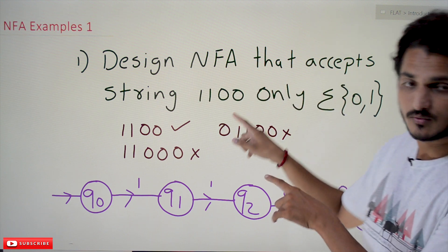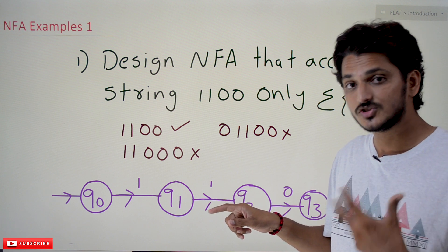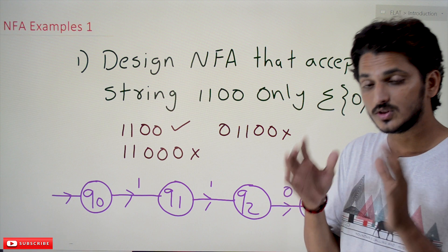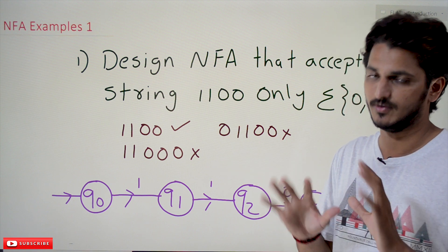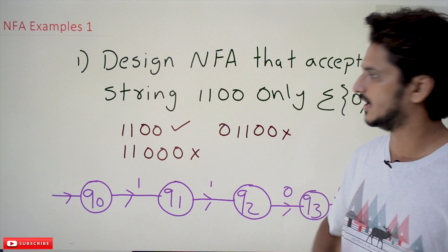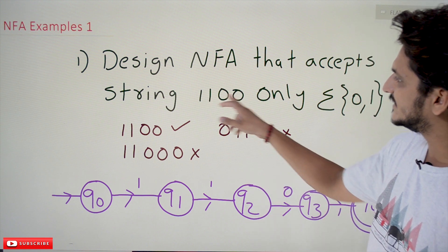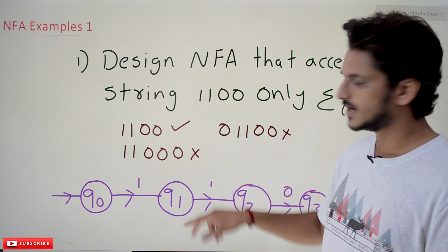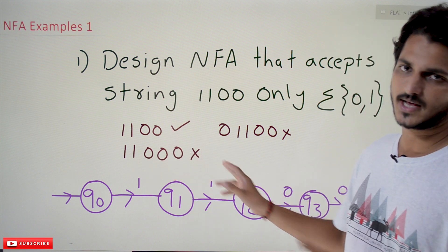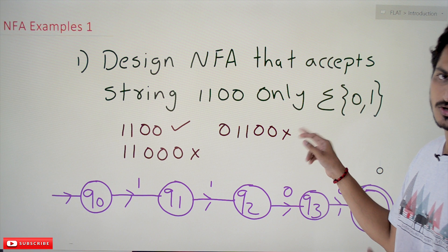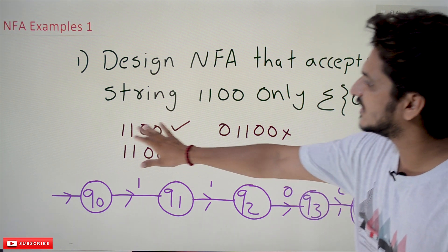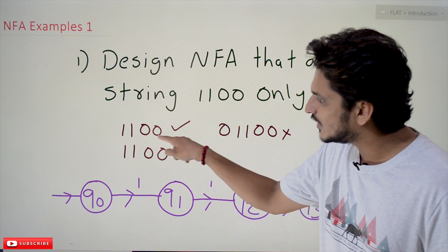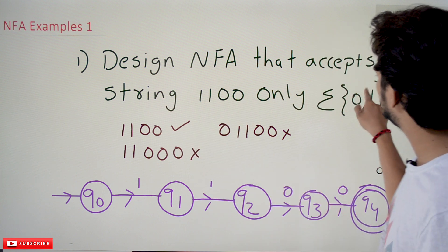For the same question we already discussed how to construct the DFA, so we will compare both NFA and DFA so that you will get a good understanding of both concepts. Double one double zero only means this string is accepted. Zero double one double zero is not accepted. Anything other than the string double one double zero is not accepted. The input symbols are zero and one.